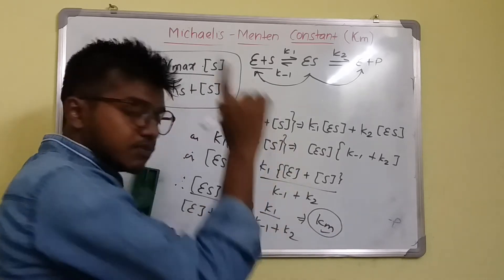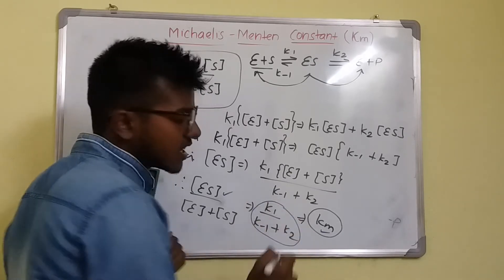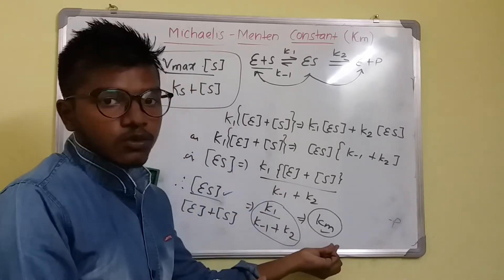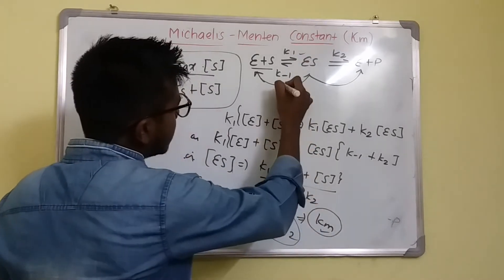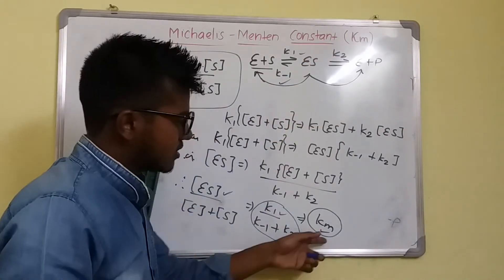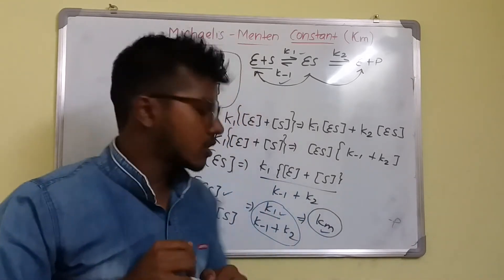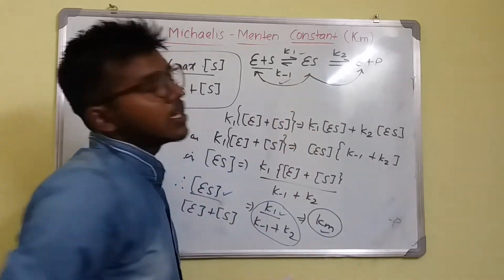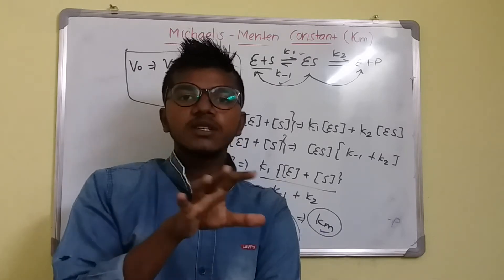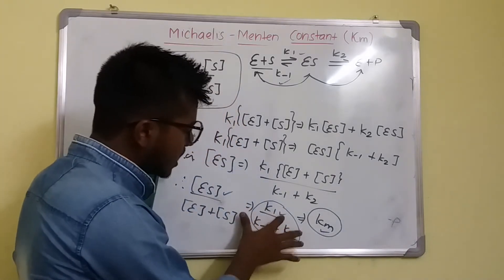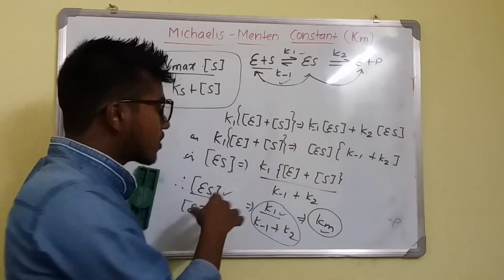So what is KM? KM, as given by Briggs and Haldane, is ES divided by E plus S. If we know the various rates of reaction in chemistry, then we can calculate the Michaelis-Menten constant. K-1 is the rate of forward reaction, K-1 is the rate of backward reaction, and K2 is again a forward rate. In any examination, if we are given these rate values, we can calculate KM using the formula KM equals K-1 plus K2 divided by K1.